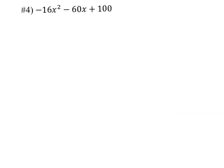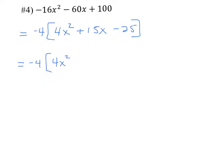Let's do another example of factoring by splitting the middle term and factoring by grouping. First, make sure our terms are in descending order with respect to the exponents: 2, then 1, then 0 — so that's done. Second, we want the lead coefficient to be positive; it doesn't have to happen technically, but you'll be more successful if you do. Also, if there's a GCF, factor that out — there is a GCF of negative 4, which will leave me with 4x squared plus 15x minus 25, since dividing by negative 4 changes all the signs.